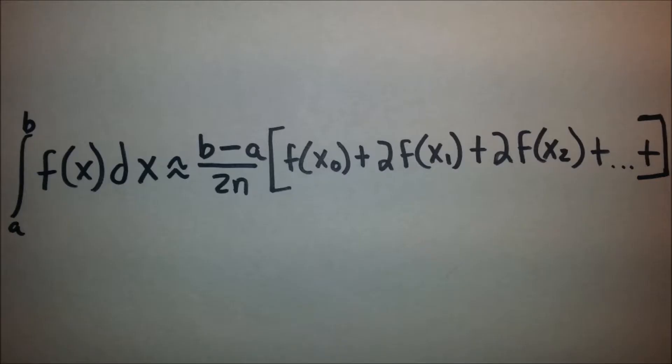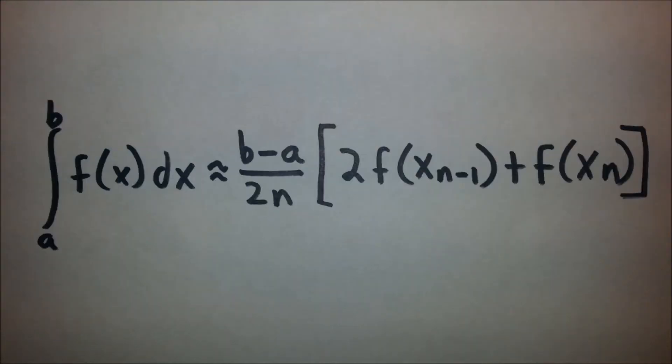Then we finally end up with the integral from a to b of f(x)dx is approximately (b-a)/2n times [f(x₀) + 2f(x₁) + 2f(x₂) and so on and so forth]. Or it can be rewritten as 2f(x_{n-1}) + f(xₙ).